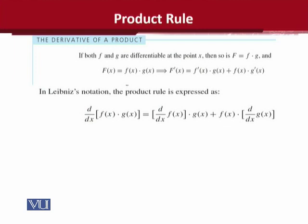This method is simple. We have to differentiate both functions fx and g of x one by one, but we have to treat the other function as a product. In the form of a product, we have to write both. You can see that f bar of x is written.